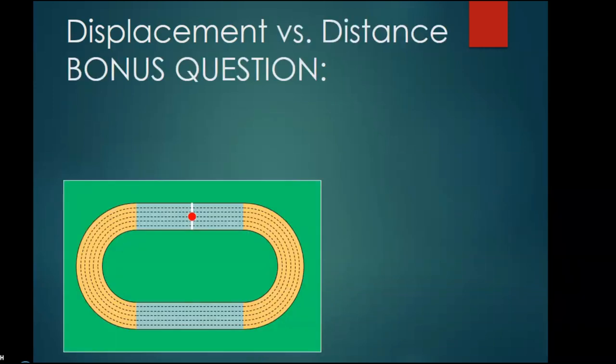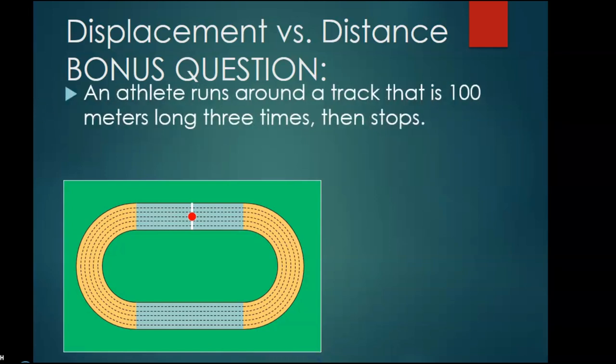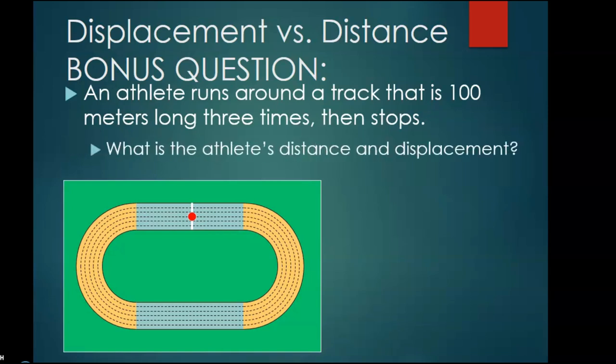Displacement versus distance — bonus question. An athlete runs around a track that is 100 meters long three times, then stops. Identify the distance and then the displacement, and send your answer via messenger to your science teacher. What is the athlete's distance and displacement?